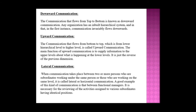Upward communication flows from bottom to top — from a lower hierarchical level to a higher level. For example, when labor is talking with the boss. The main function of upward communication is to supply information to the upper level about what is happening at the lower level. This is the reverse of downward communication — in downward communication, the boss talks to labor; in upward communication, labor talks to the boss.